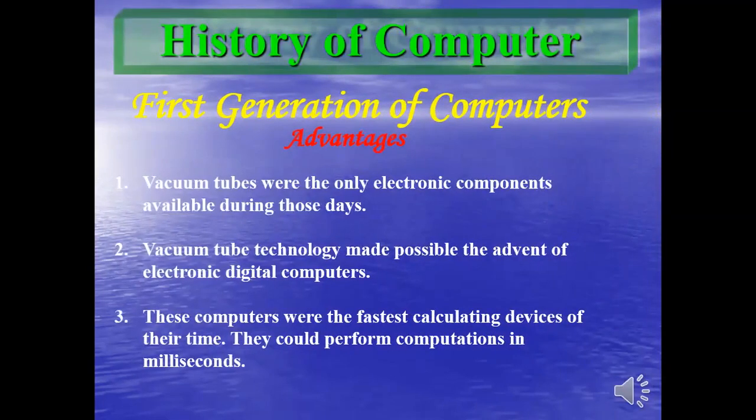Now let's look at the advantages of first generation computers. First, vacuum tubes were the only electronic components available at that time, so manufacturers could only use them. Second, vacuum tube technology made possible the advent of electronic digital computers.